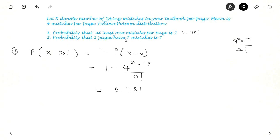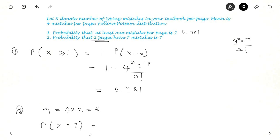Now find the probability that 2 pages have exactly 7 mistakes. The mean is 4 mistakes per page, so for 2 pages ν = 4 × 2 = 8. P(X=7) = 8^7 * e^(−8) / 7! = 0.379. There is approximately a 37.9% chance that 2 pages will have exactly 7 mistakes.